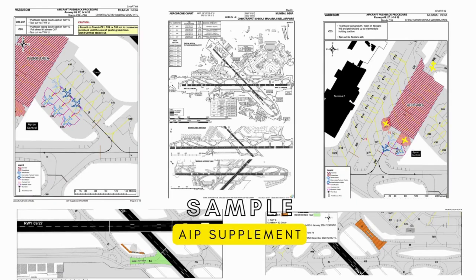Changes in affected operational procedure include pushback in the affected area. This work will be completed in 197 days — longer than three months — thus it is announced in an AIP supplement. When the apron is finally renovated with new dimensions and stand numbers, that's a permanent issue which is found not in a supplement but in an amendment.